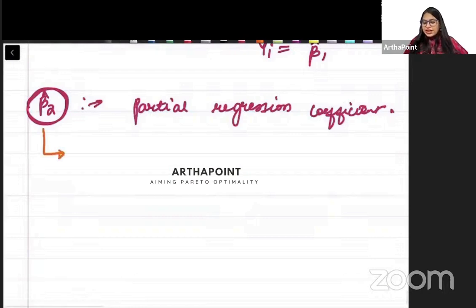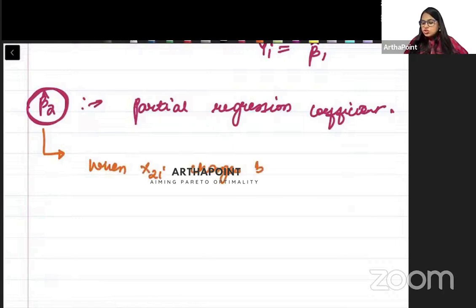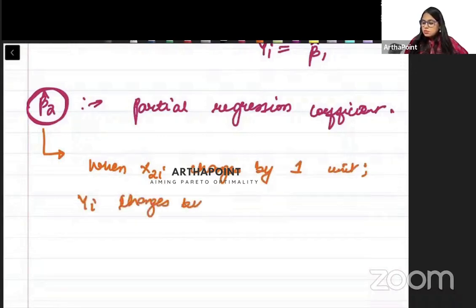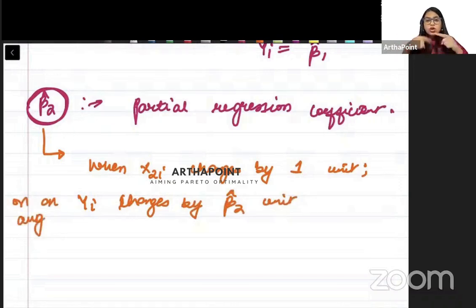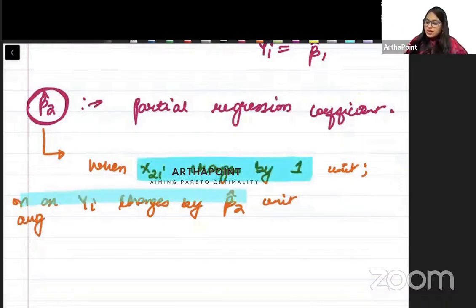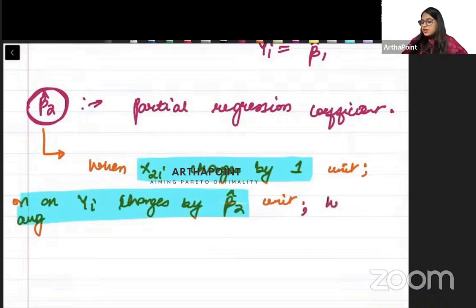So we can interpret beta 2 hat as: when x2i changes by one unit, yi changes by beta 2 hat units. Here note, on an average. Because we are talking about conditional mean, remember, so we always talk in terms of average. So when x2i changes by one unit, on an average yi changes by beta 2 units, holding x3i constant.